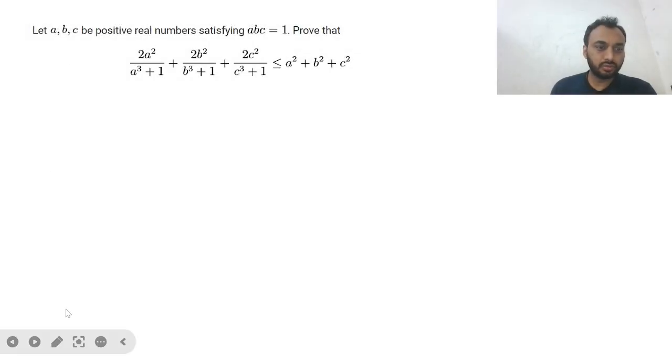Hi guys, let's see question number 2 of RMO KV 2025. We have given a, b, c are positive real numbers satisfying abc equals 1, prove that 2a²/(a³+1) + 2b²/(b³+1) + 2c²/(c³+1) is less than or equal to a² + b² + c². So we have abc equals 1 and we have to prove this.